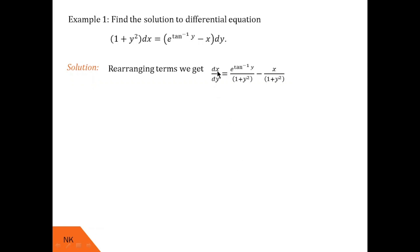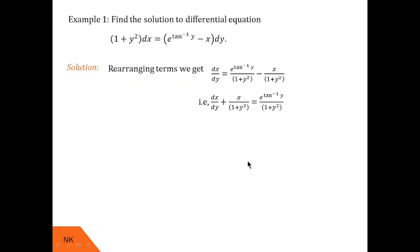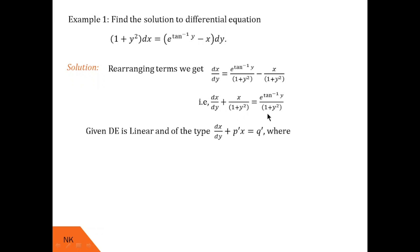Since x is the dependent variable, on the right-hand side we want only functions of y. So we take the term x/(1 + y²) to the left-hand side to get dx/dy + x/(1 + y²) = e^(tan⁻¹y) / (1 + y²). This differential equation now looks exactly like dx/dy + p'x = q', where p' = 1/(1 + y²) and q' = e^(tan⁻¹y) / (1 + y²).